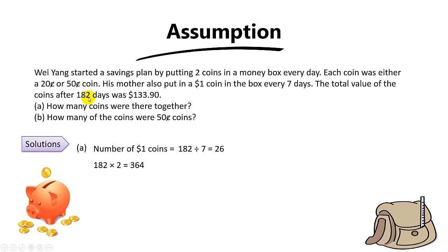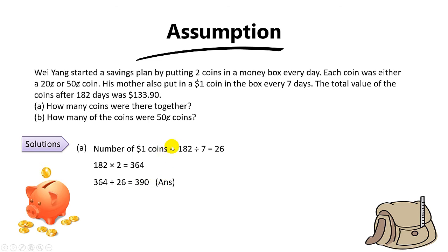To find the total coins altogether, you take 364 plus the 26 one-dollar coins that his mother gave him, and you get a final answer of 390 coins. That's for part A, which uses the grouping concept.